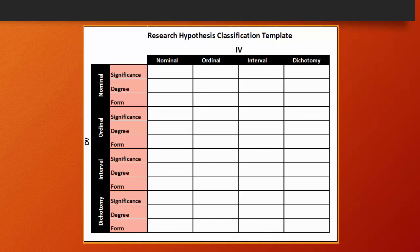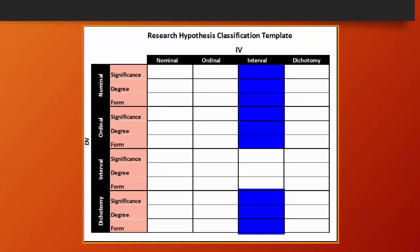So you can see what's created here, as we think about significance, degree, and form. There are 16 different boxes here. We're going to fill in most of these boxes throughout the remainder of the course. Some of the boxes we're going to omit because they're ideally suited for graduate level education.